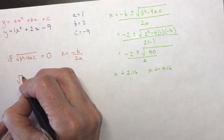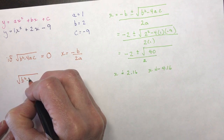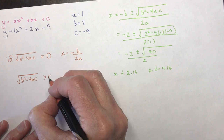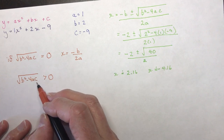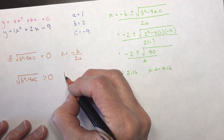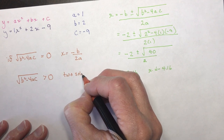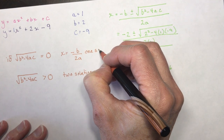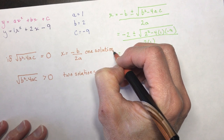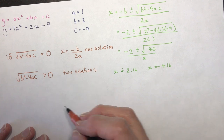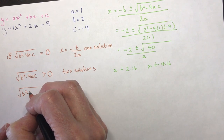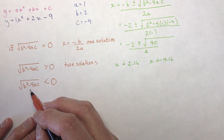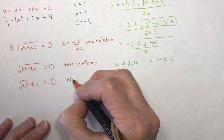What happens if b squared minus 4ac is greater than zero? If it's greater than zero, I would get two solutions. So when the discriminant is zero, you get one solution — one root or one zero. And if b squared minus 4ac is less than zero, you cannot take the square root of a negative number, which means there is no solution.